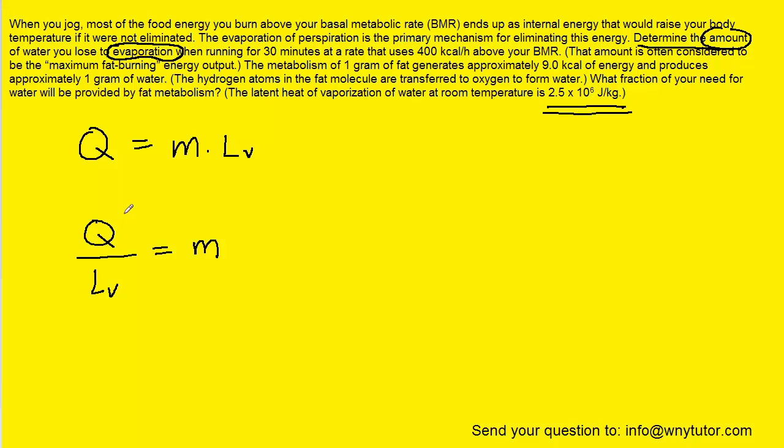What we need to figure out is the Q, which is the amount of heat energy. Heat energy is measured in joules, but the question gives us this peculiar value of 400 kilocalories per hour. So let's take a closer look at that value.